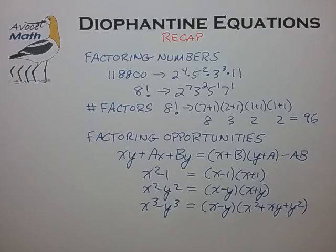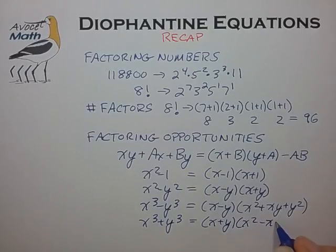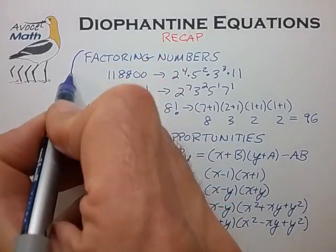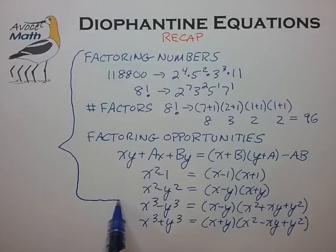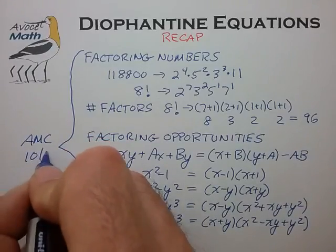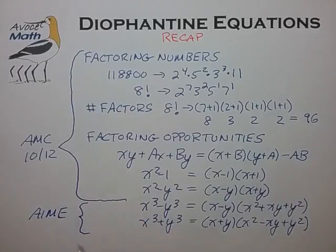Also, the sum of cubes factors quite nicely — this flips the sign for xy, and the rest is pretty much the same. In terms of the AMC and the AIME, I would say the upper portion here — the grouping and difference of squares — is something you really need to be on the lookout for on the AMC 10 and 12. The section on factoring cubes is probably more likely to appear at the AIME level of testing.